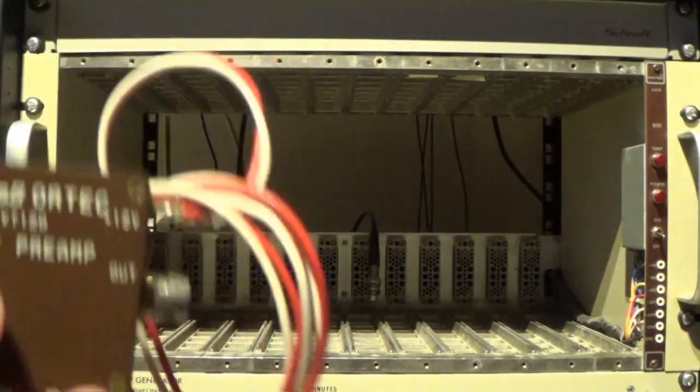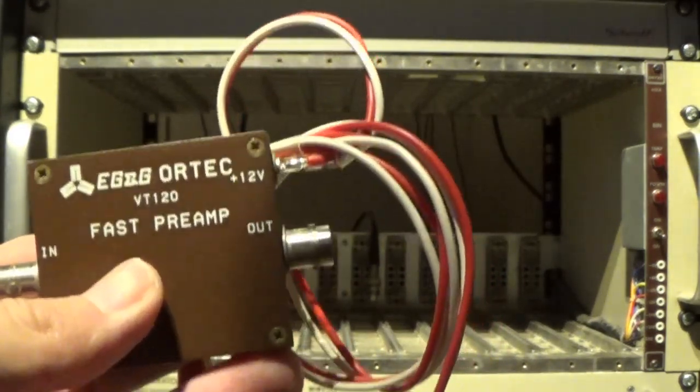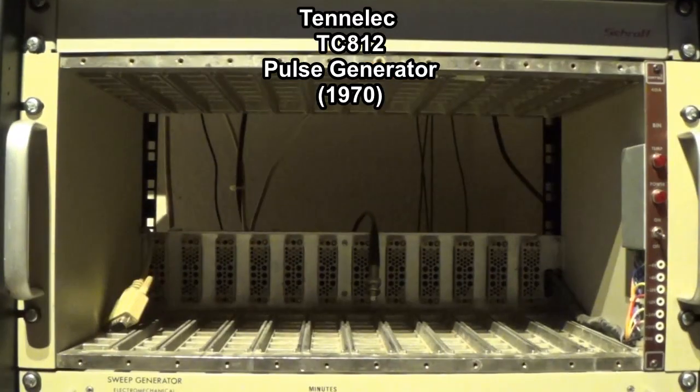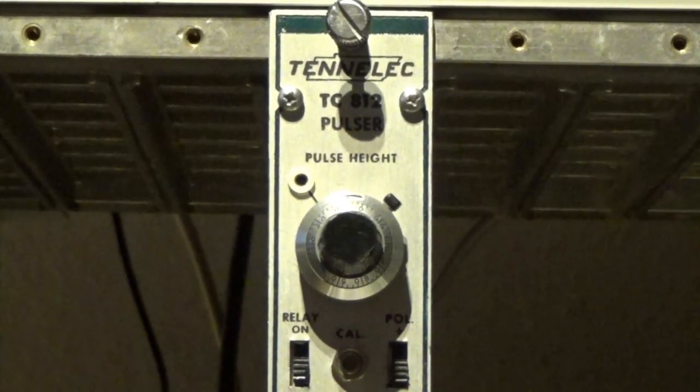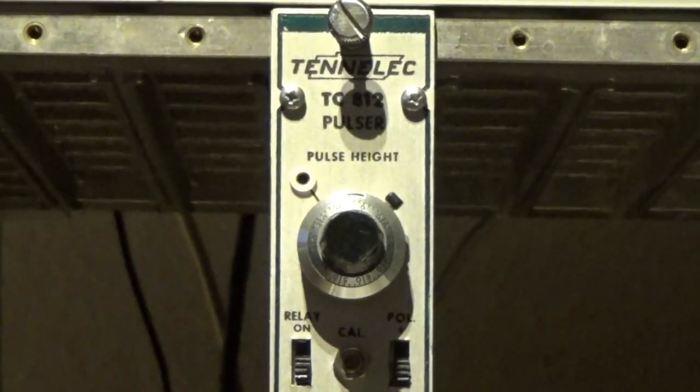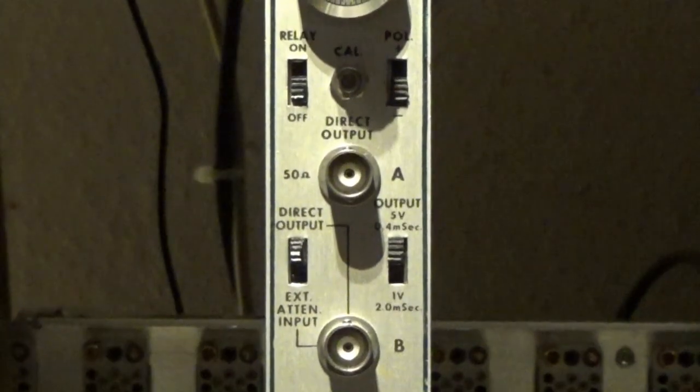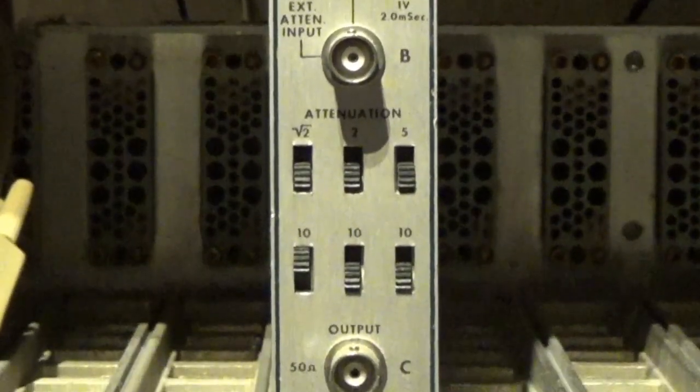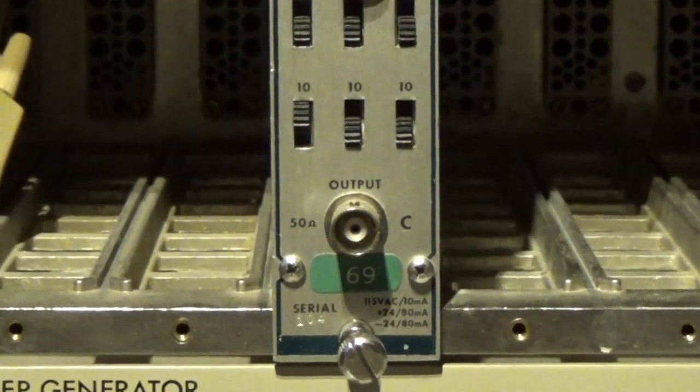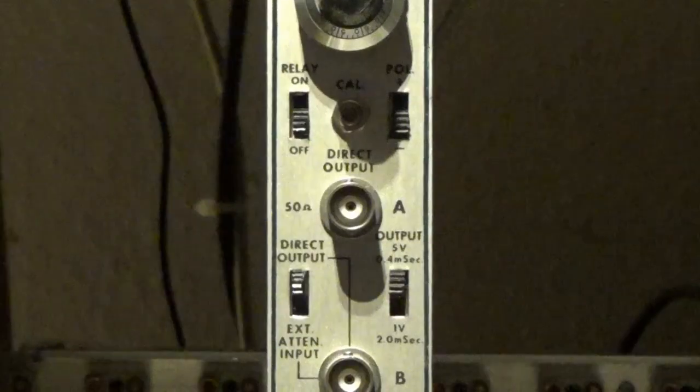First of all, we have our preamplifiers. I'm using these Ortec fast timing preamplifiers. They are practically made especially for this. I think I've shown this module before. It's a Tenelec TC812 pulse generator, usually used for calibrating gamma spectrometers and stuff. And it's basically just a mercury relay in a box with some added features. It's quite handy, and it works quite well. I think it's 60s vintage. It's going to be much too slow though. That's why we need to use the preamplifier.